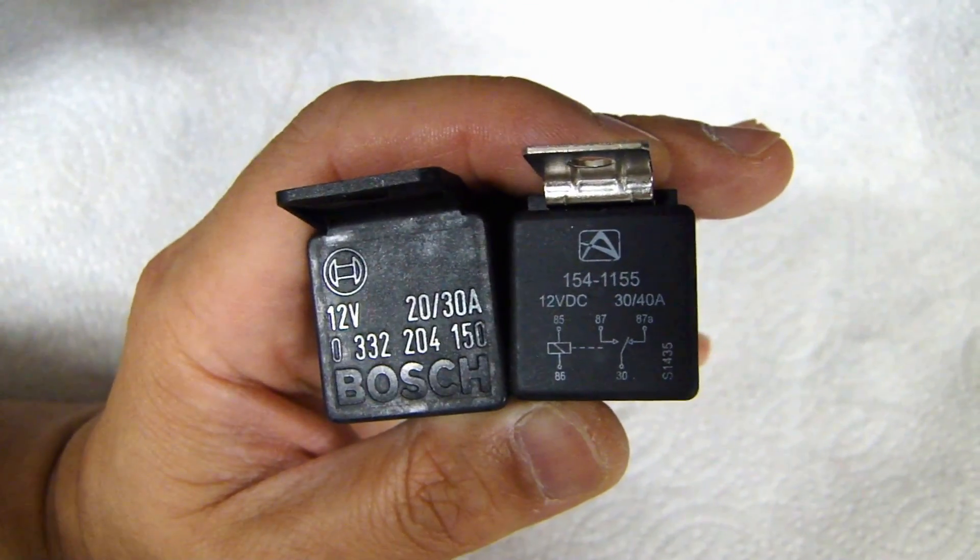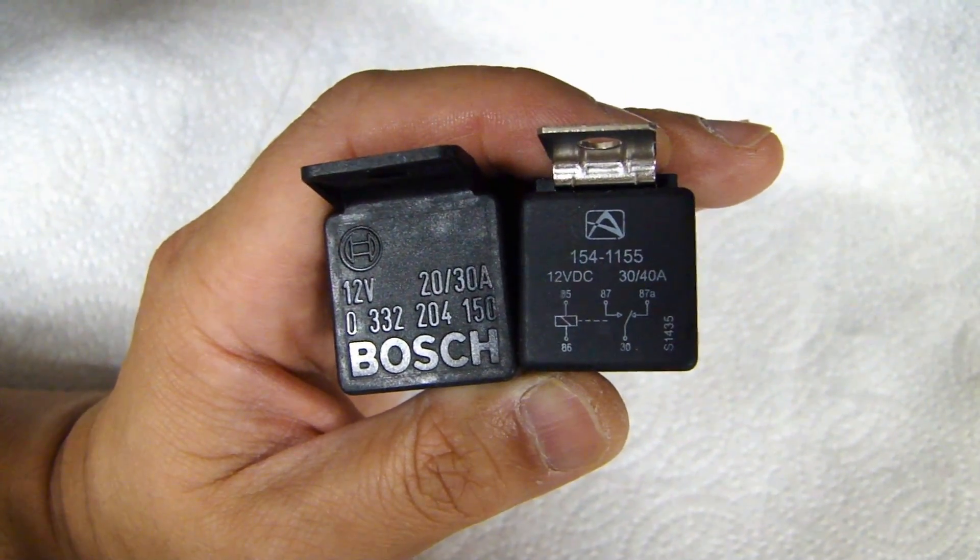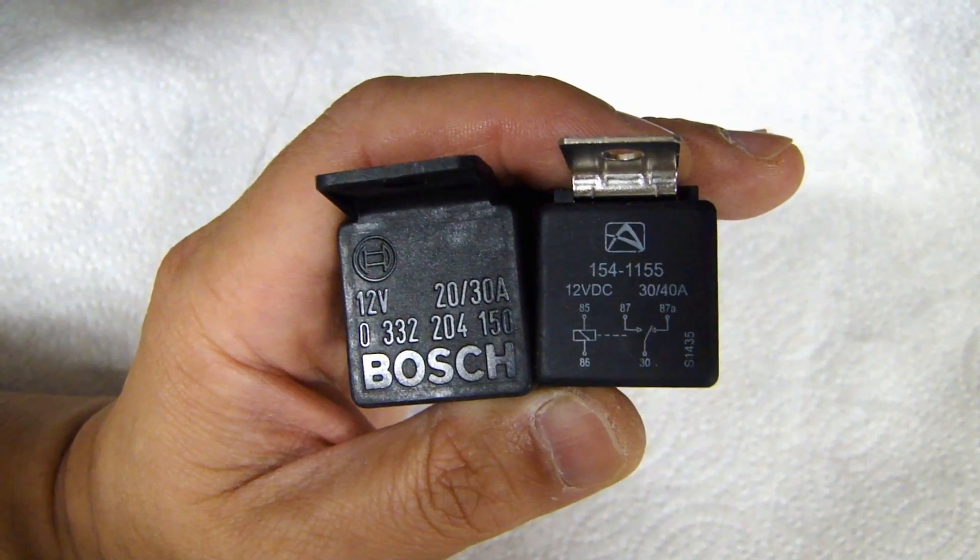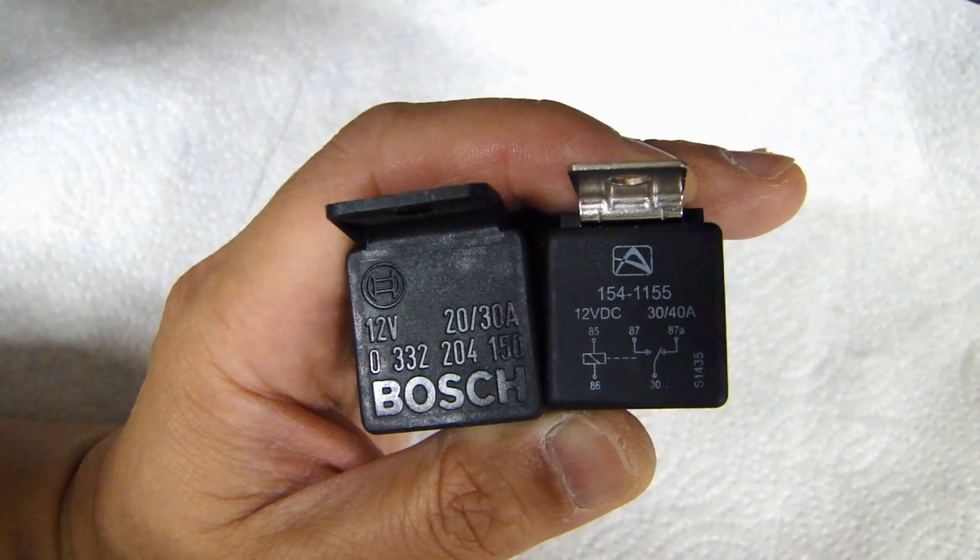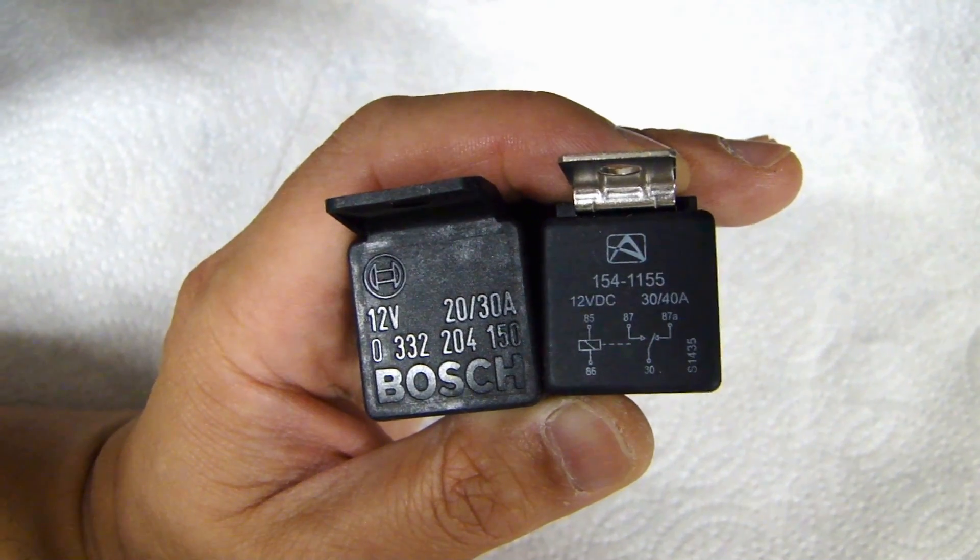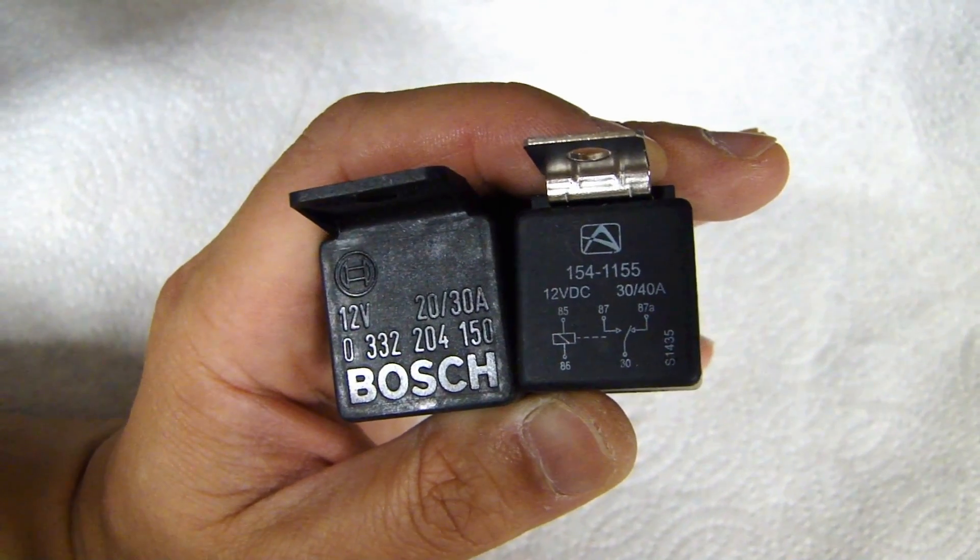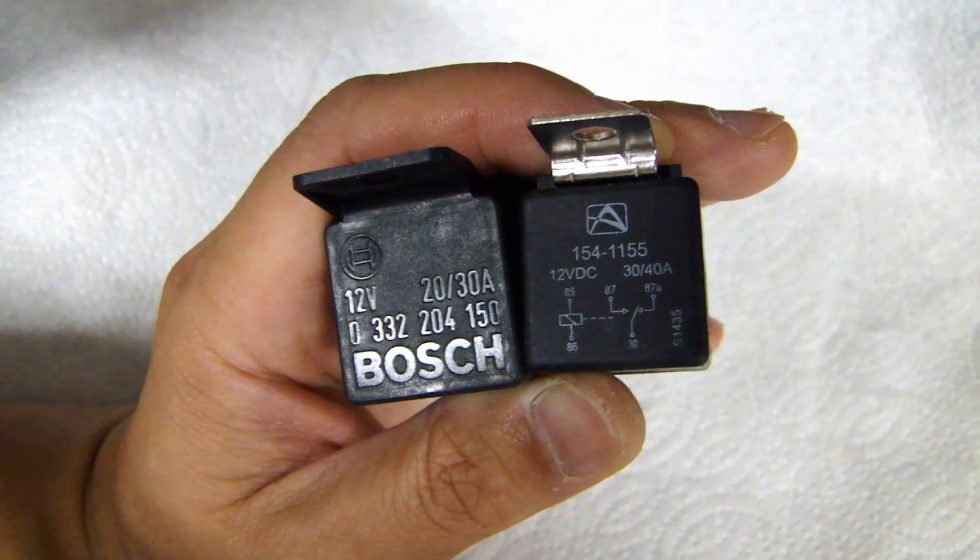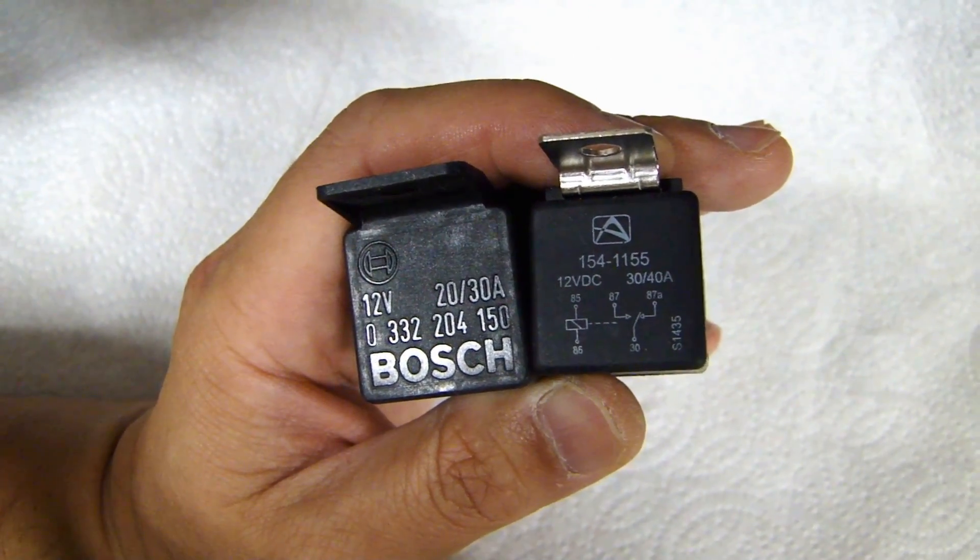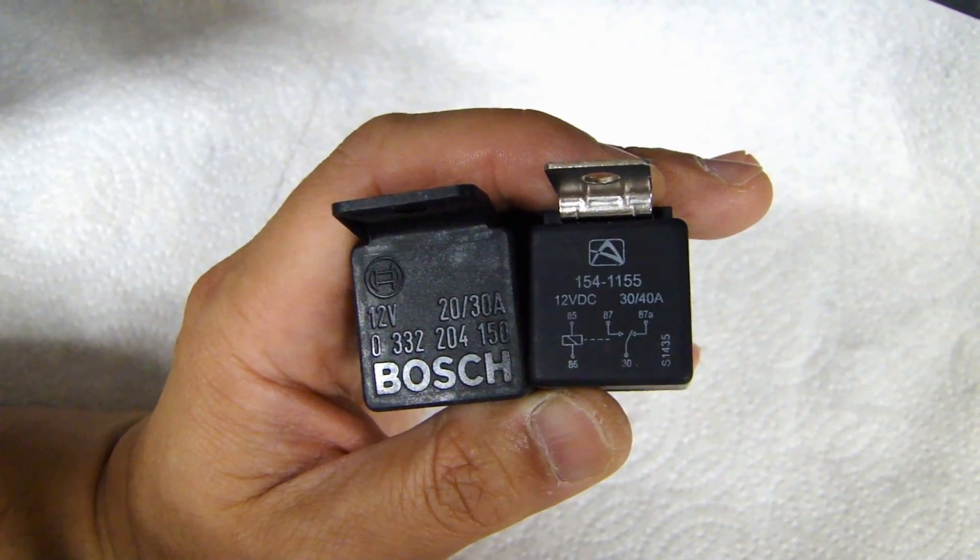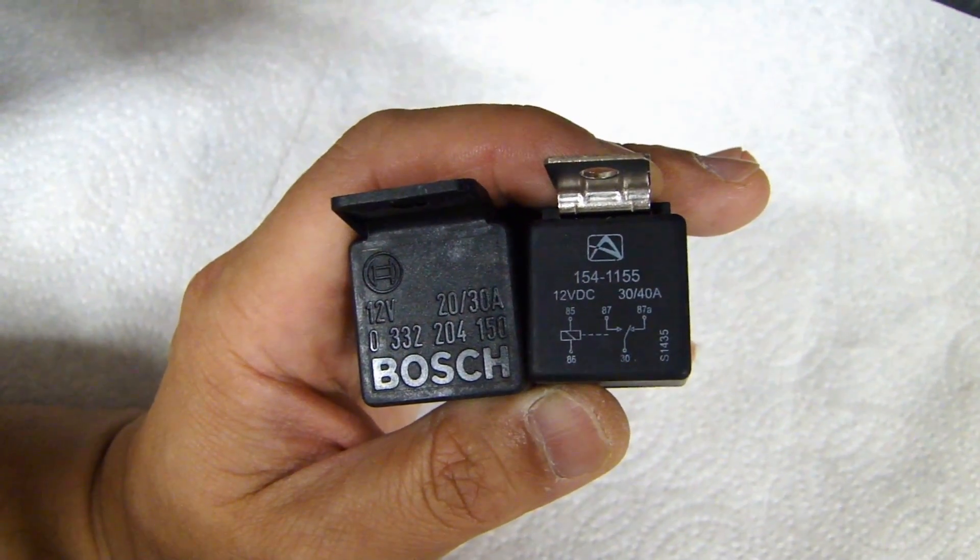What these two numbers mean is that because this is a single pole, double throw relay, the side that is normally closed, or the contacts that's closed, is rated for the 20A. When the relay switches over to the normally open contact, that contact is rated for 30A for the Bosch one, and 40A for the one on the right. That's why you see two ratings. So the maximum current rated for the normally open side compared to the normally closed side are different.